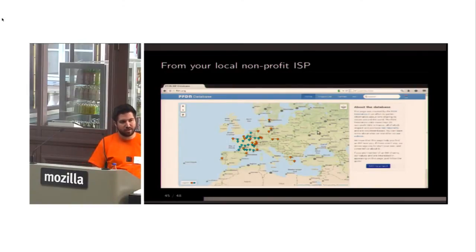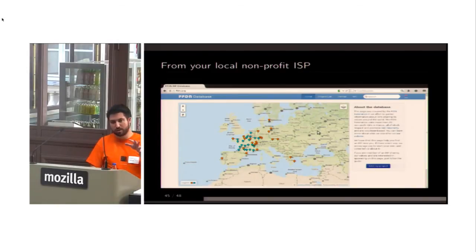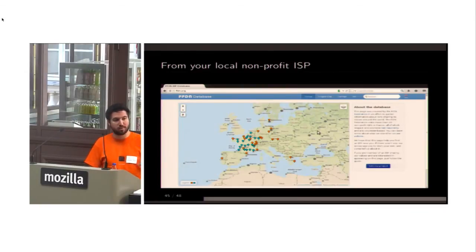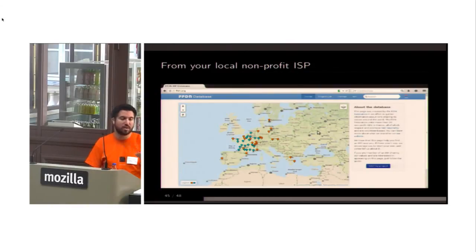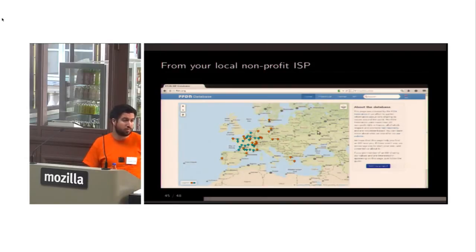The federation FDN is very small, but today we are 29 organizations across France and Europe, with more than two thousand people involved in these structures — two thousand members — and more than half of them are connected through ADSL or wireless through a non-profit ISP.